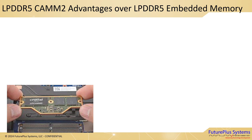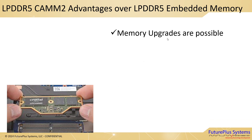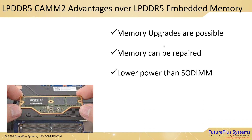LPDDR5 CAM2 has some significant advantages over LPDDR5 embedded memory. Embedded memory is soldered down directly to the motherboard, whereas LPDDR5 CAM2 is held down with screws. That means memory can be upgraded and it can be repaired. In addition, LPDDR5 CAM2 uses less power than a SODIMM.